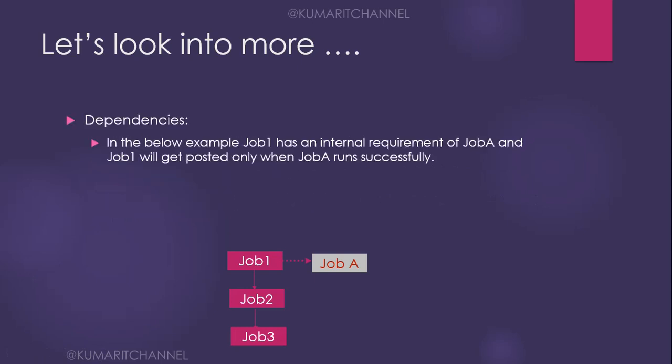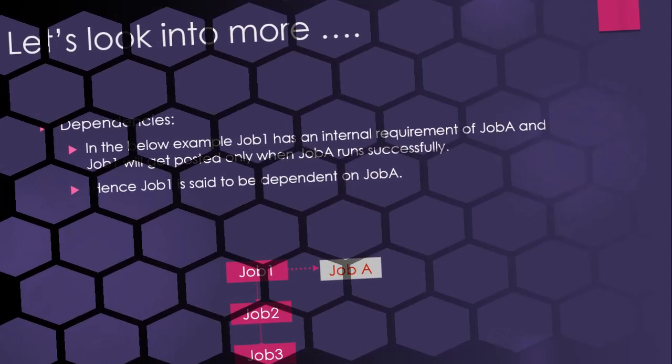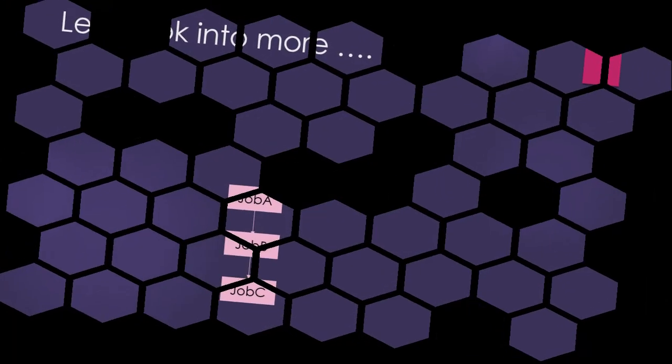Dependencies: job 1 has an internal requirement of job A, and job 1 will get posted only when job A runs successfully — that is a dependency, hence job 1 is dependent on job A. Similarly, job 2 is dependent on job 1, and job 3 is dependent on both job 2 and job 1. This is how you see successors and predecessors in CA7.